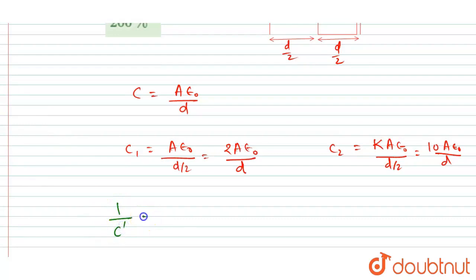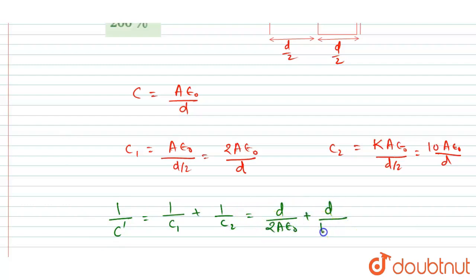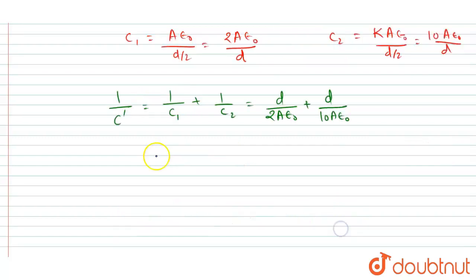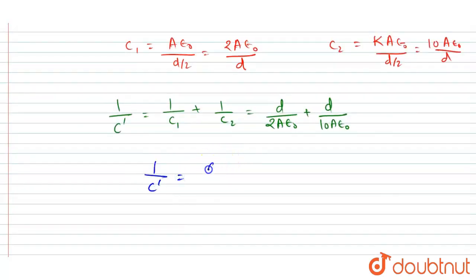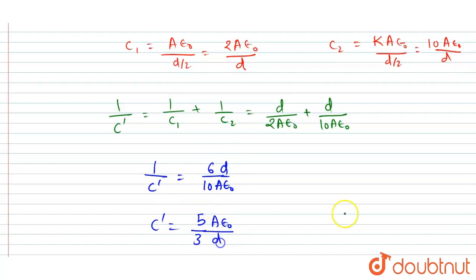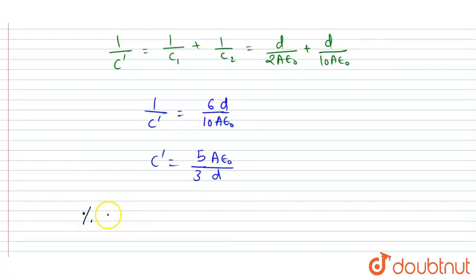Since they are connected in series, I apply the series formula: 1/C_dash = 1/C1 + 1/C2. Working through the calculation, 1/C_dash equals 6/(10Aε₀/d), and so finally C_dash equals 5/3 · Aε₀/d.